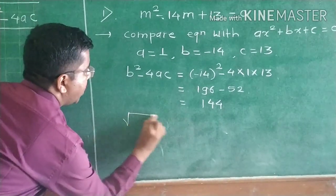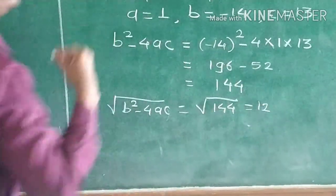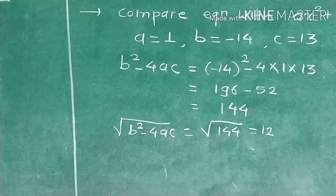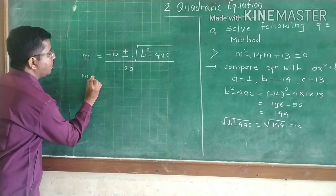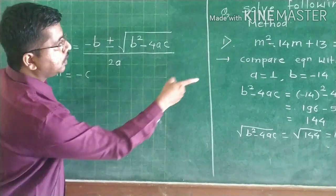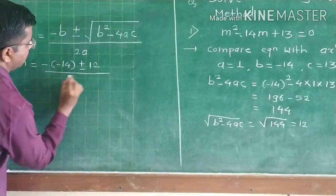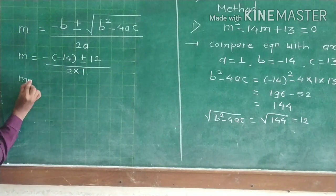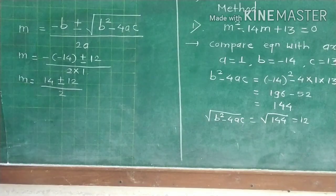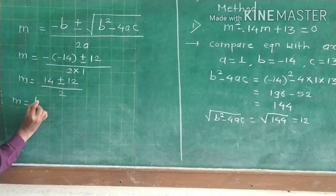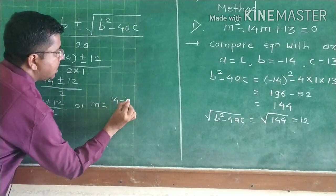Now taking the square root of b squared minus 4ac, that is the square root of 144, we get 12. Now we use the formula: m equals minus b plus or minus the square root of b squared minus 4ac upon 2a. Putting in the values: m equals minus of minus 14, plus or minus 12, upon 2 times 1, which gives m equals 14 plus or minus 12 upon 2.